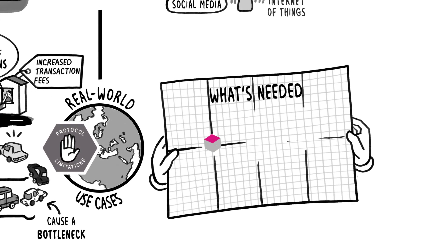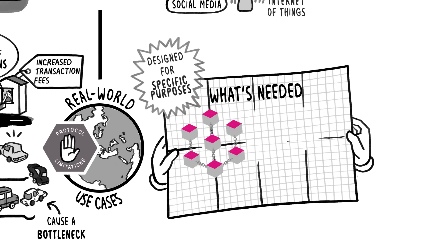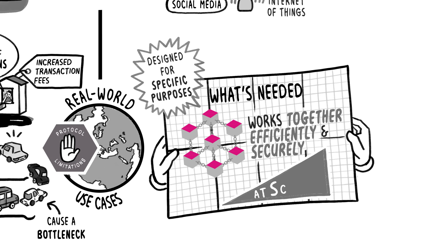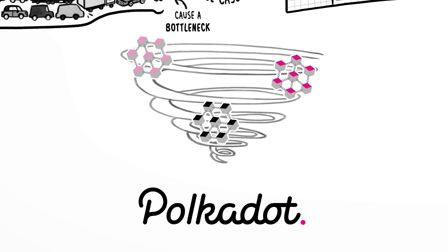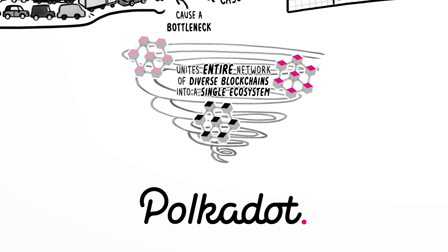What's needed is a way for blockchains, designed for specific purposes, to work together efficiently and securely at scale. This is Polkadot, a sharded blockchain protocol that unites an entire network of diverse blockchains into a single, decentralized ecosystem.